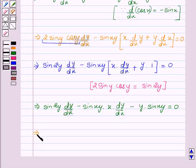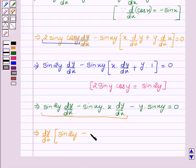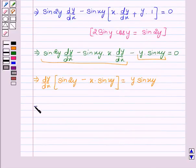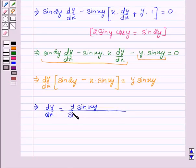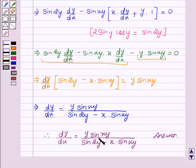Now we take dy/dx common from the first two terms, giving dy/dx·[sin(2y) − x·sin(xy)], and shift the remaining term to the right-hand side, giving y·sin(xy). Therefore dy/dx = y·sin(xy) / [sin(2y) − x·sin(xy)].